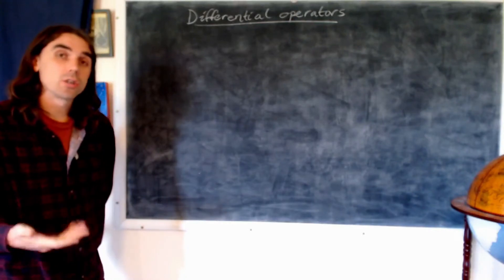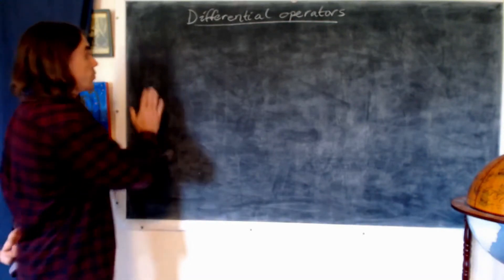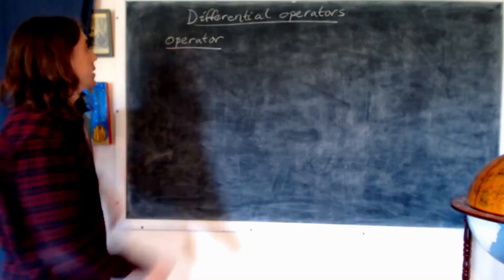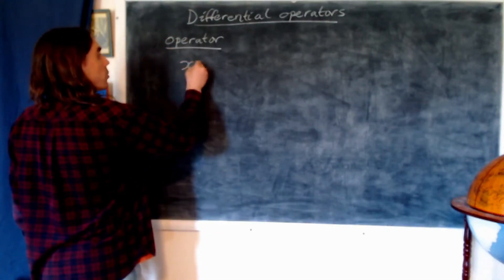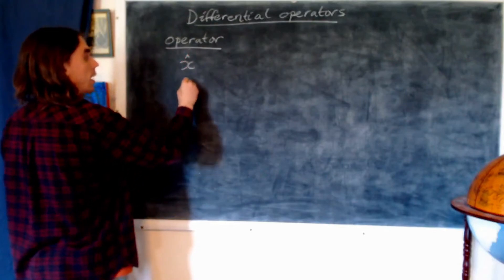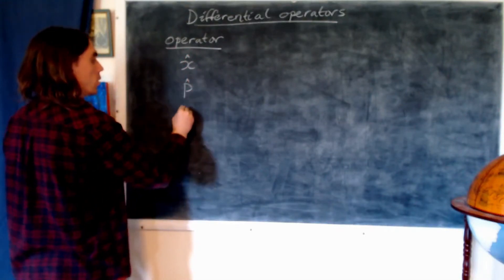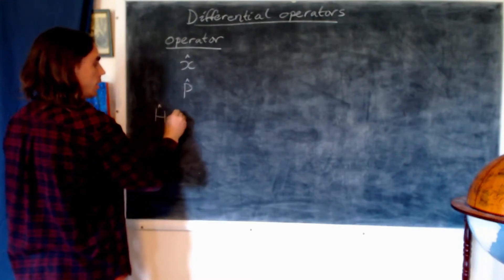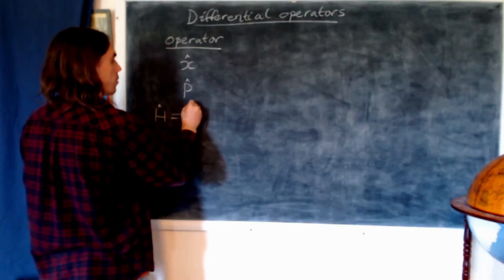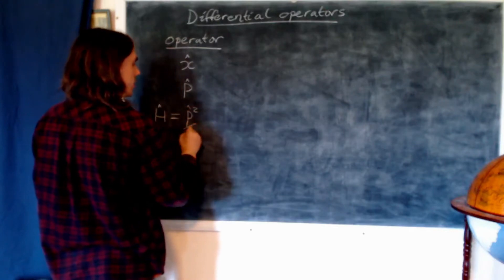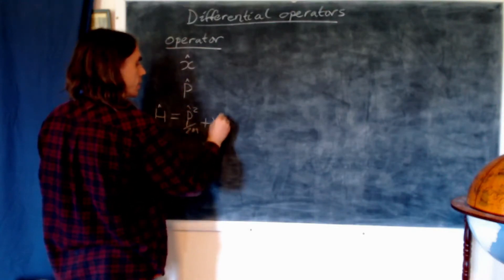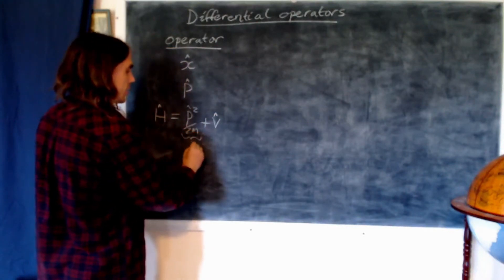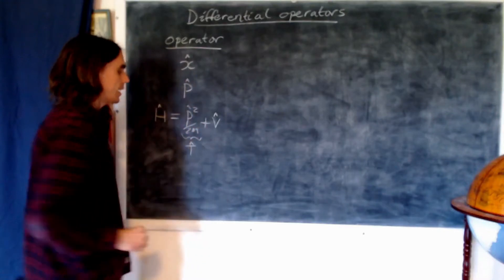We can construct the following table of relations. We have our general operator — something like the position operator, which we've already seen, or the momentum operator, or the energy operator H, the Hamiltonian, which is equal to the momentum operator squared over 2m plus the potential energy operator. We sometimes call this term T, the kinetic energy operator.